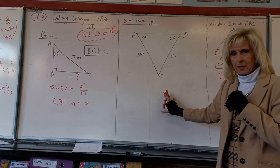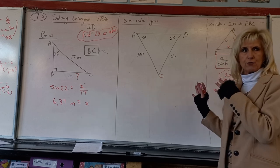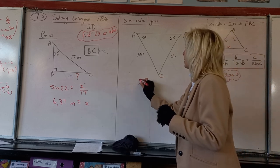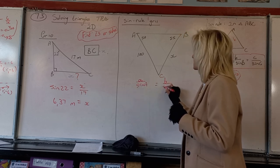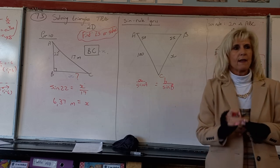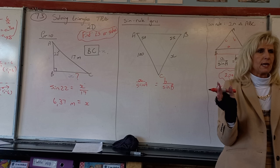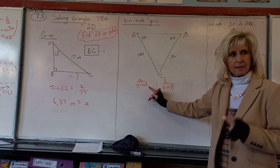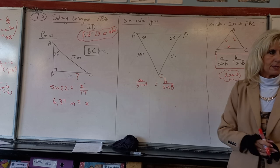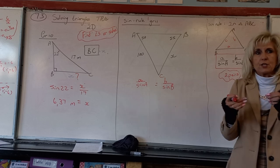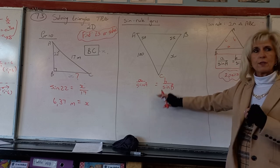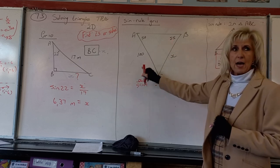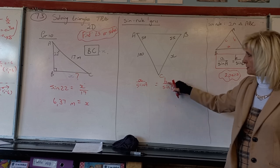When you start, write down the Sin Rule: a/sin A = b/sin B = c/sin C. You don't have to use ABC specifically — even if the triangle is XYZ or PQR, just write ABC and apply the pairs. The pair I have here is 100 and sin 55°; the half pair is x (the side) and sin 50°. Put the side at the top and the sine of the angle at the bottom.